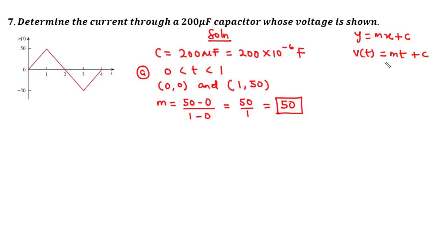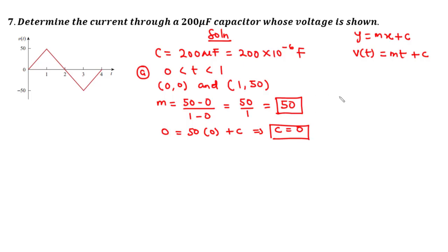To find c, we substitute the first point (0, 0): 0 = 50 times 0 plus c, so c = 0. Therefore, with m = 50 and c = 0, the voltage equation for the interval 0 to 1 is V(t) = 50t.